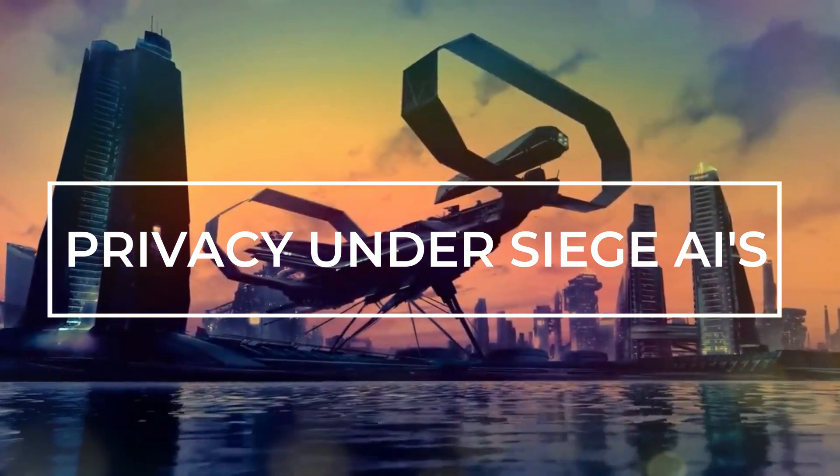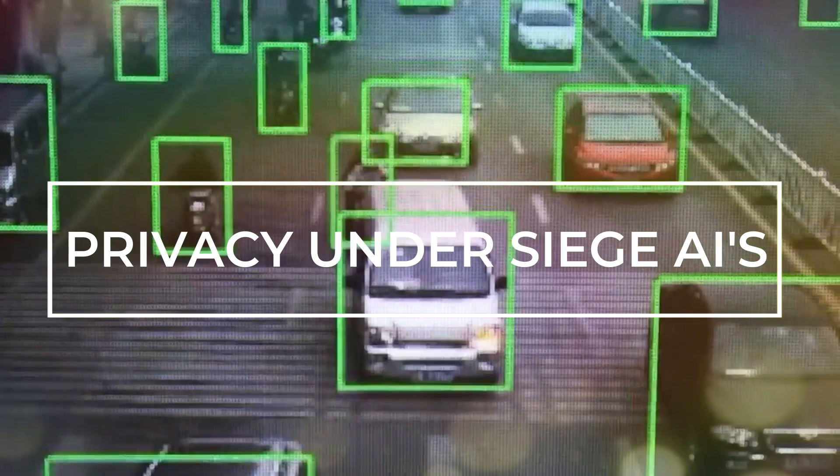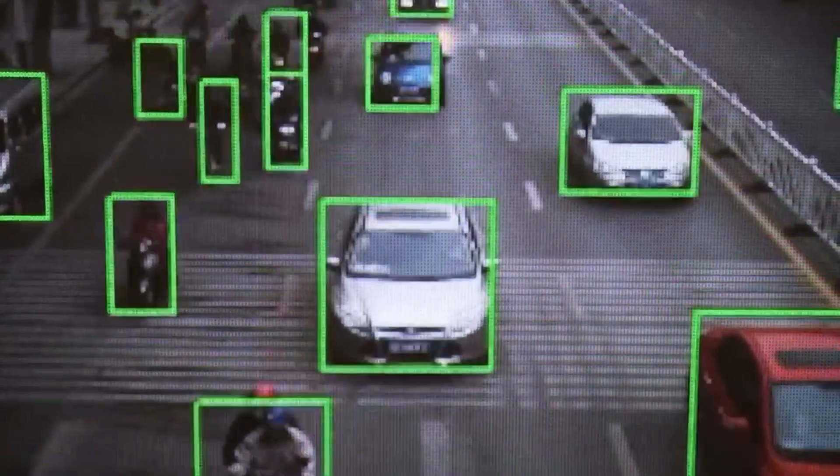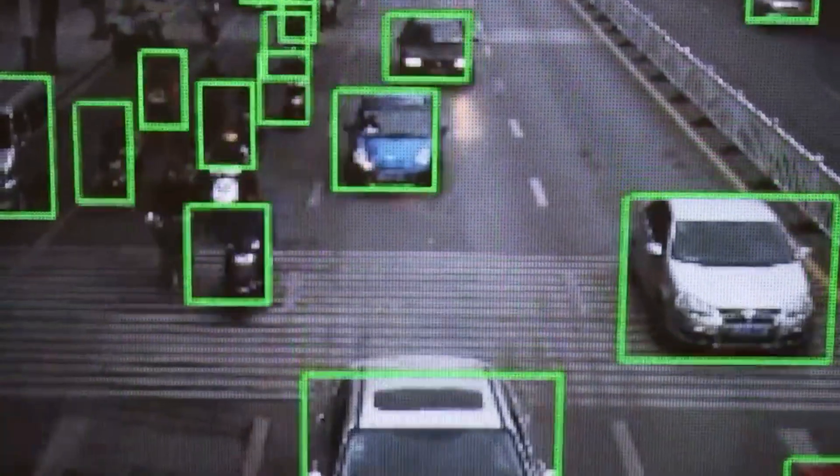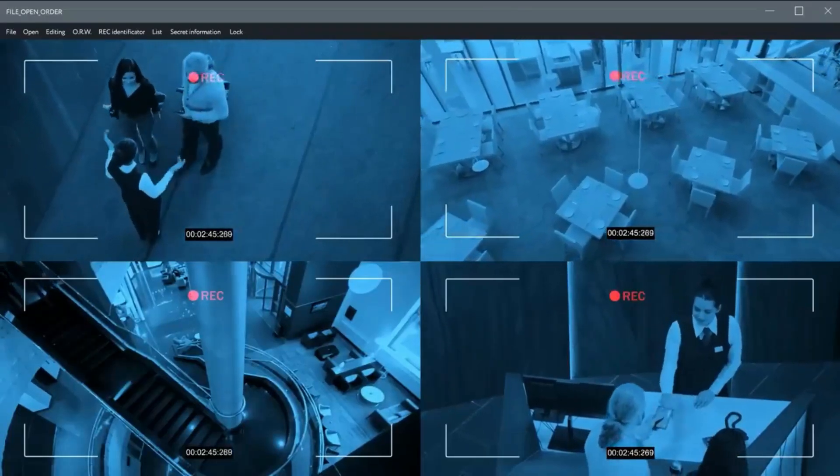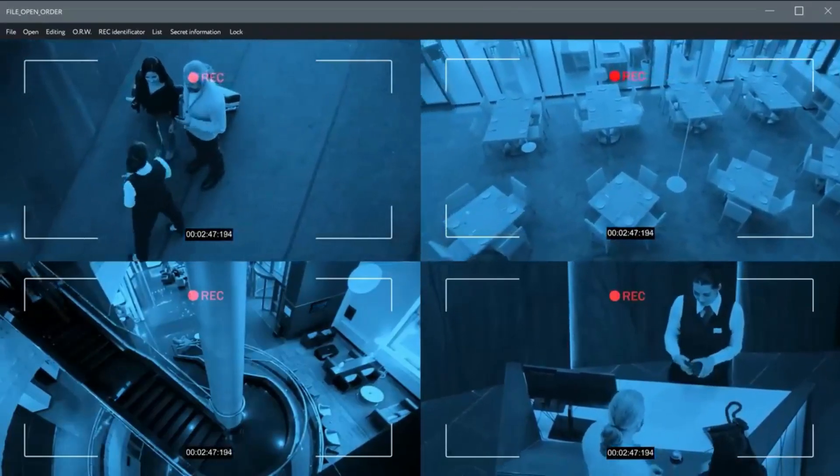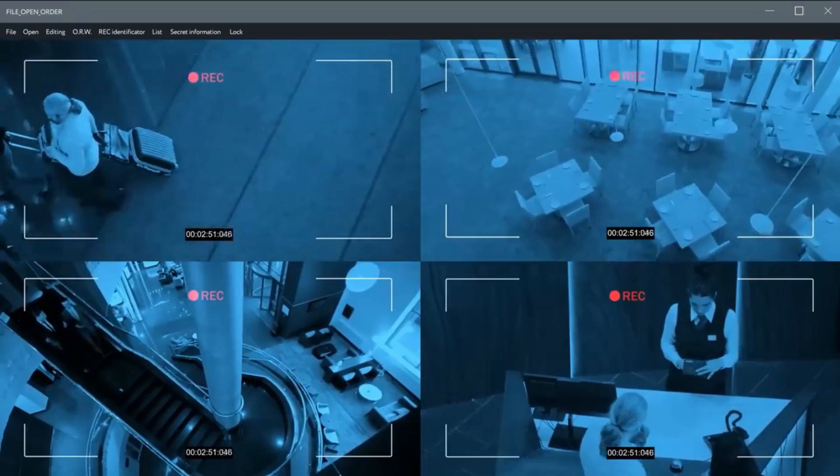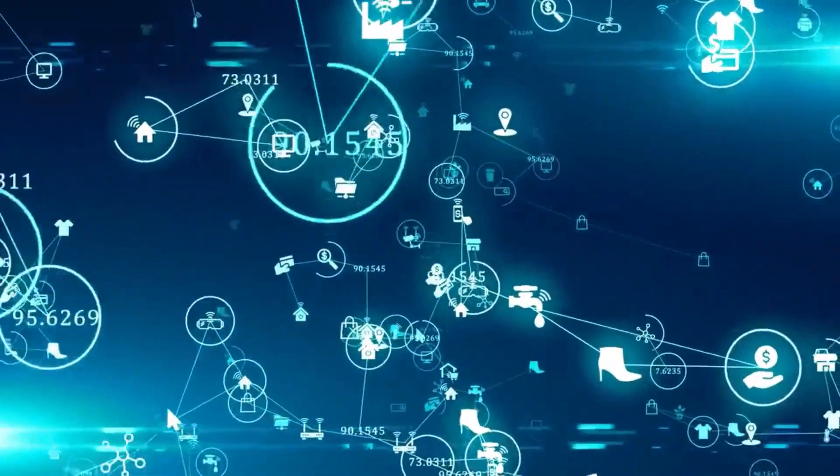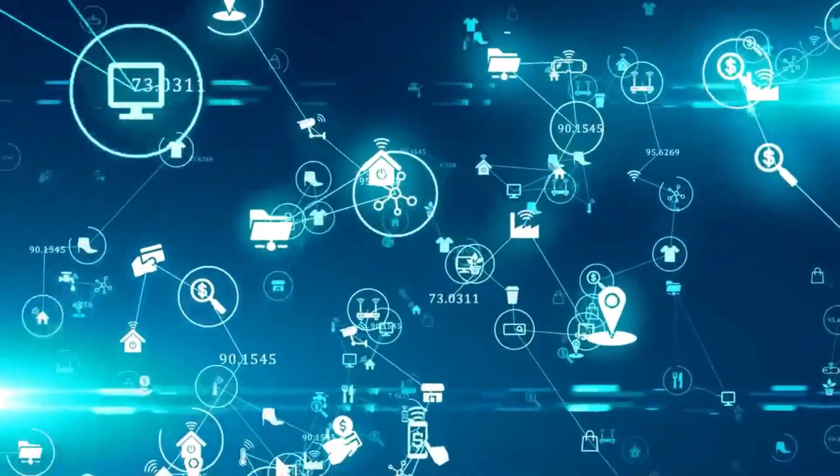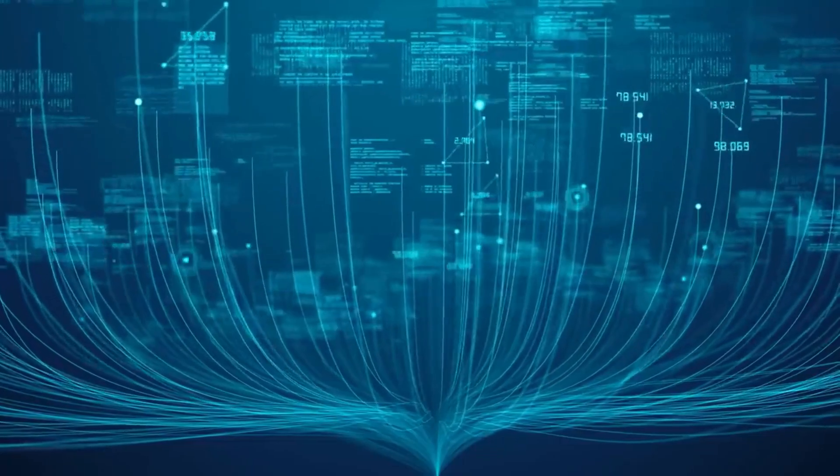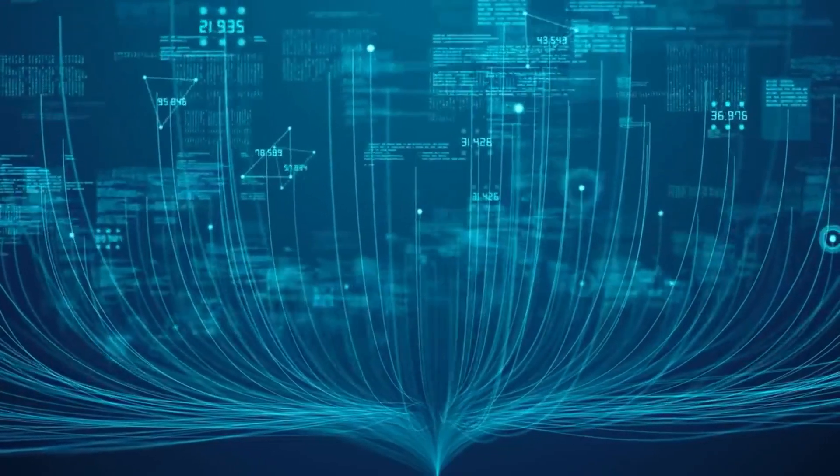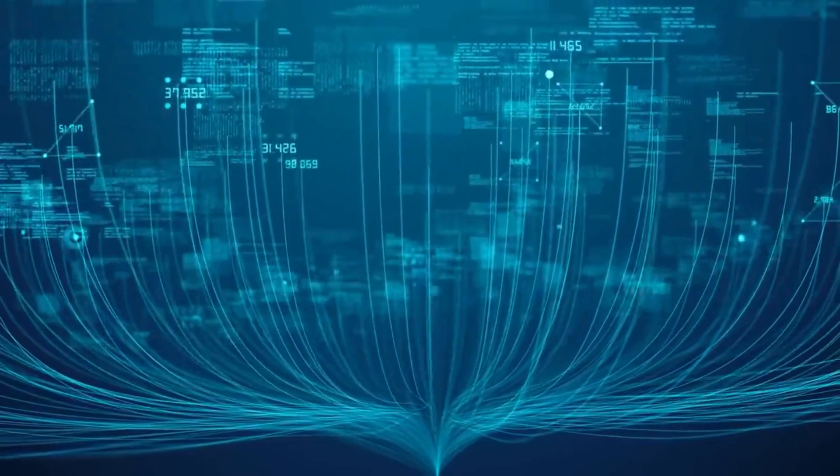3. Privacy Under Siege. Imagine yourself walking through a futuristic city where hidden eyes track your every move, silently gathering fragments of your personal life. Welcome to the frontier of privacy invasion, driven by AI-powered surveillance systems that monitor our digital footprints and scrutinize our behaviors. But how does AI dismantle the concept of privacy? The answer lies in its relentless hunger for data. The more data AI consumes, the sharper and more efficient it becomes.